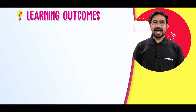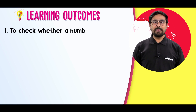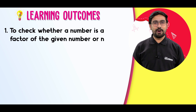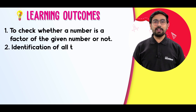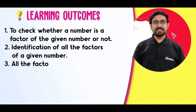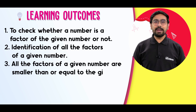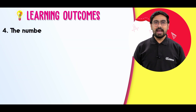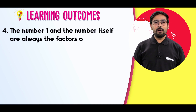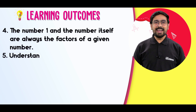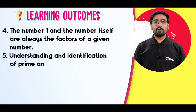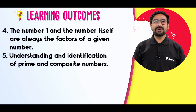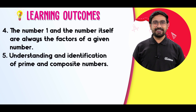After doing this activity, you will have gained expertise in the following concepts: how to check whether a number is a factor of a given number; identification of all the factors of a given number; understanding that all factors of a given number are smaller than or equal to the given number; that the number one and the number itself are always factors; and the understanding and identification of prime and composite numbers. Now you can choose more numbers to find their factors and do it yourself. Visualize Maths with IntelliBrain and fall in love with learning.